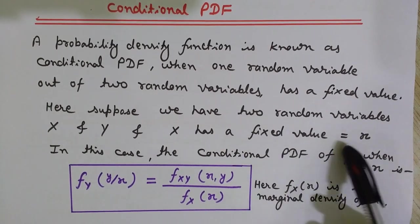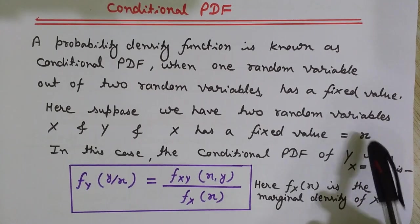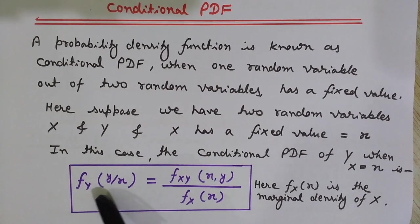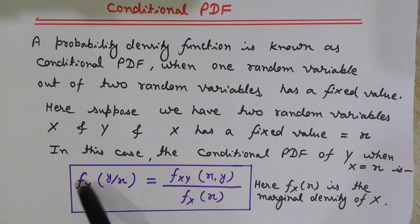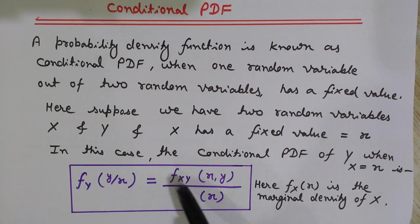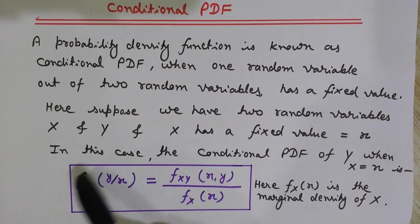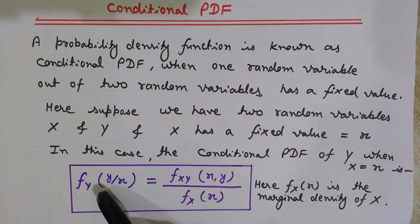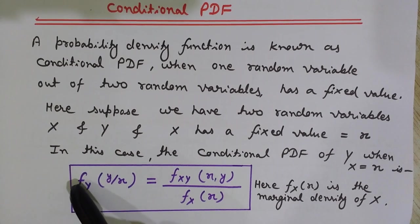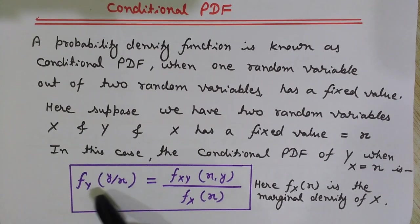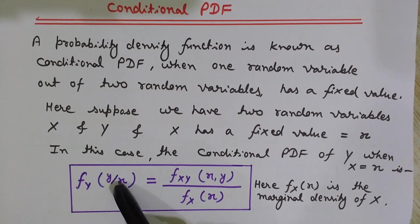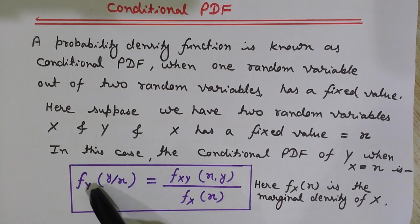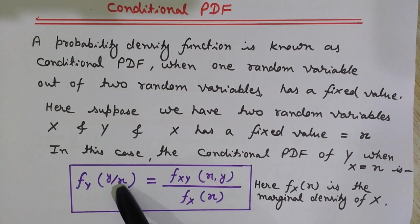This is known as a conditional probability density function because there is a condition that another random variable is fixed at a certain value — here it is small x. This is the formula to find the conditional PDF of Y. Small f denotes the probability density function and capital F denotes the cumulative distribution function. The notation f of Y given X means we are finding the conditional PDF for Y while X is fixed.